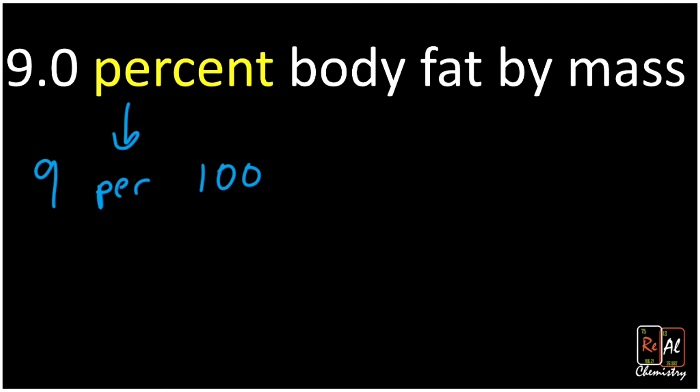But what does it convert between? This is percent body fat by mass, so the 9 is very specifically referring to fat. It's 9 fat per every 100 body mass. It looks a little weird not to have units on that—you might want 9 grams fat per every 100 grams of body mass—but the reason I'm leaving the units off...